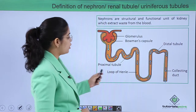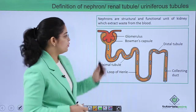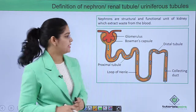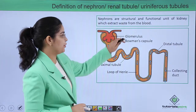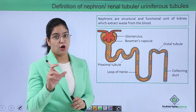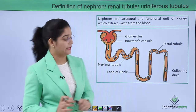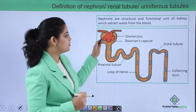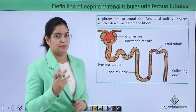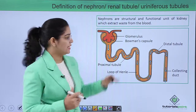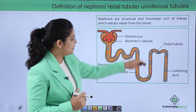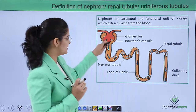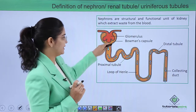The nephron is divided into different parts. The glomerulus is a tuft of capillaries present inside a sieve bowl known as Bowman's capsule. The first tubular structure connected to Bowman's capsule is the proximal tubule.